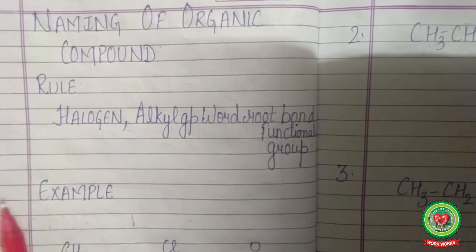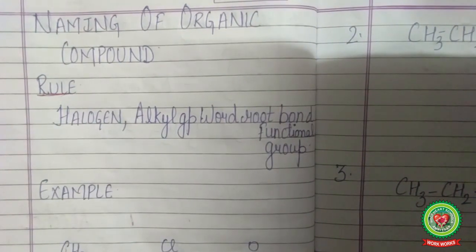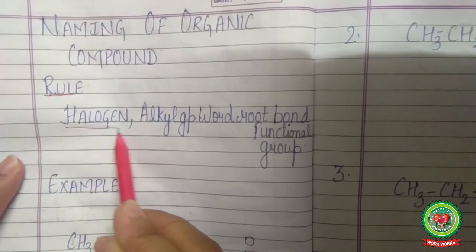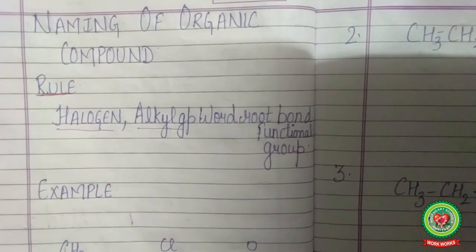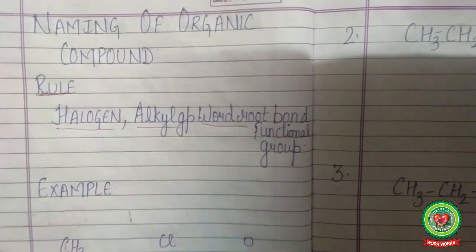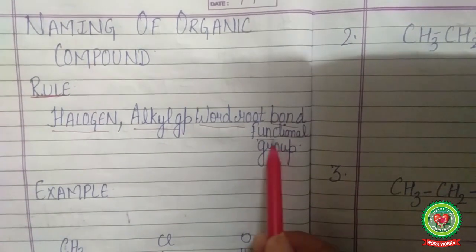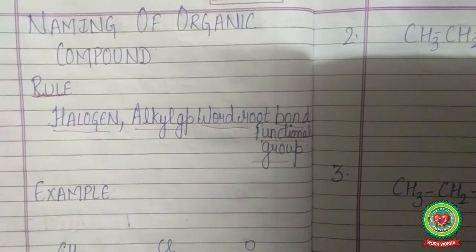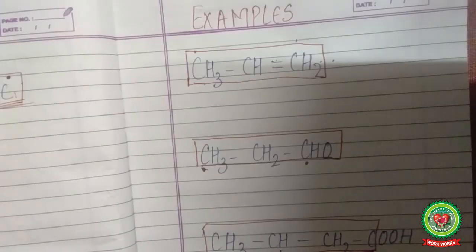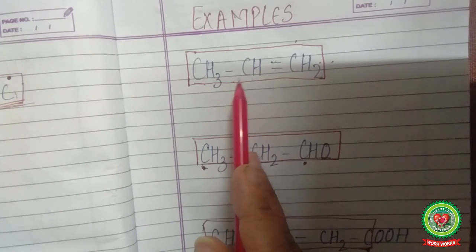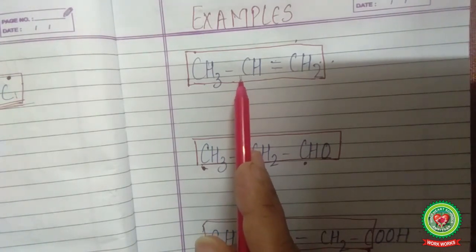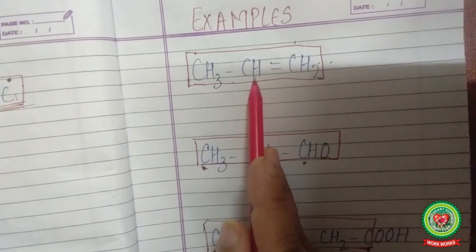After chain selection, we need to do the naming of the organic compound. When naming, we write in this sequence: first, halogen; then alkyl group; then word root; then bond suffix; and finally, the functional group. We will do an example using the chain we already selected. After chain selection, we proceed with numbering — that is the next step in nomenclature.